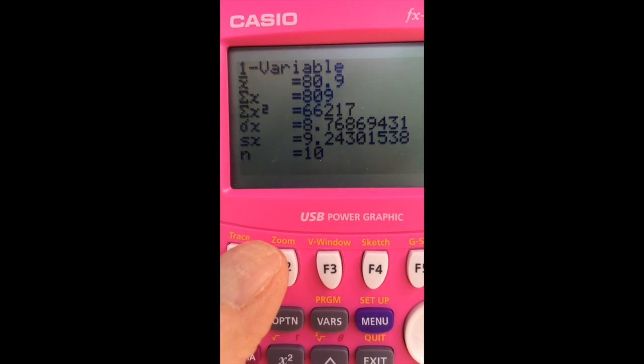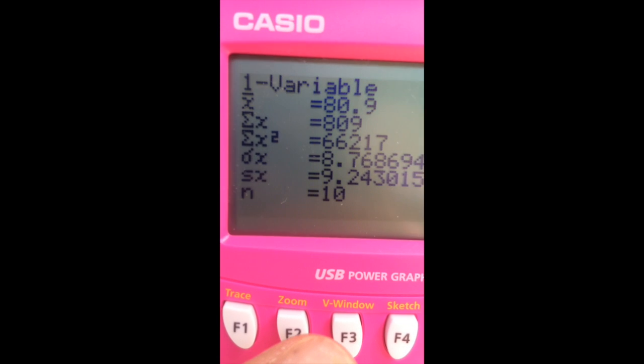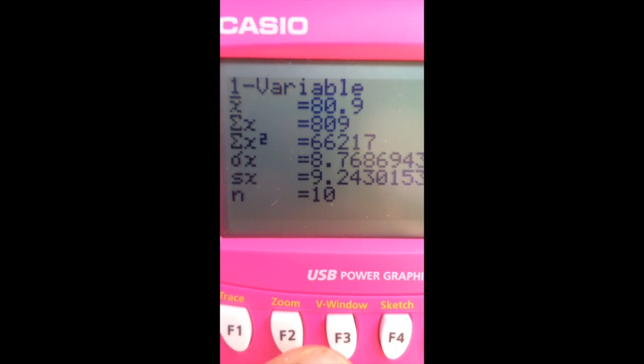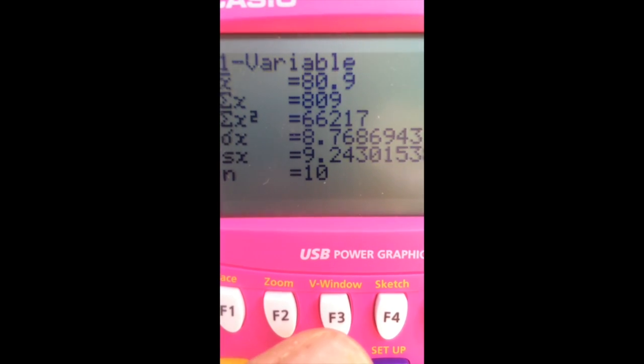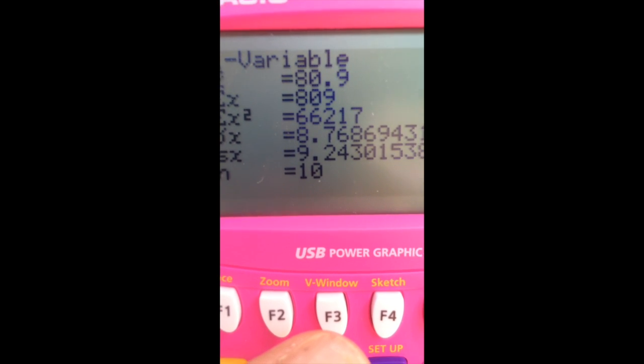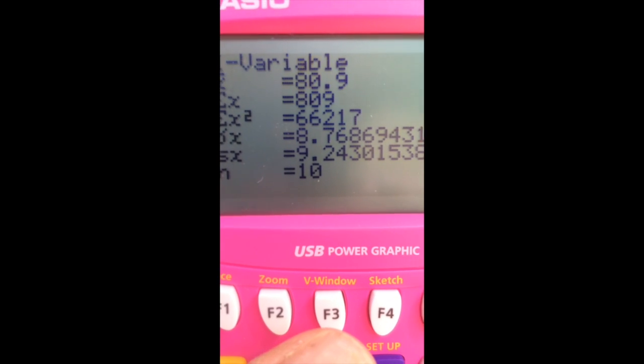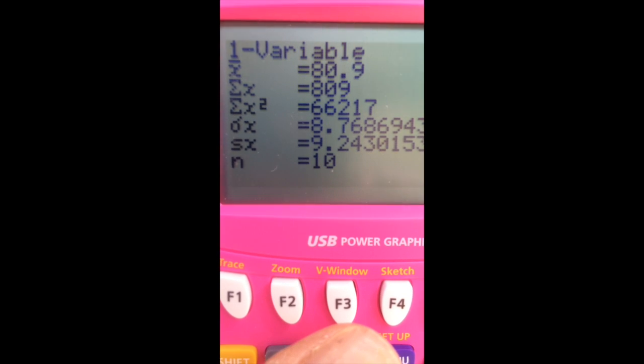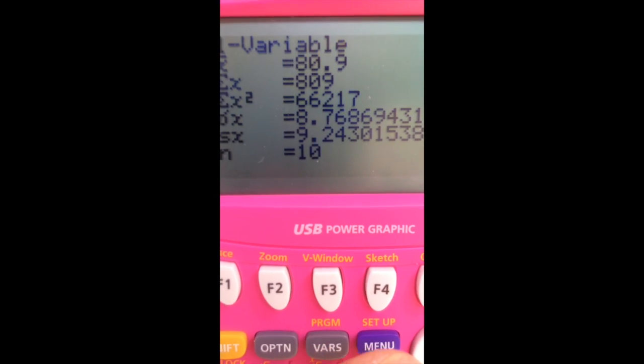And the calculator gives me lots of results. The mean is 80.9. The population standard deviation, 8.768. The sample, 9.24.